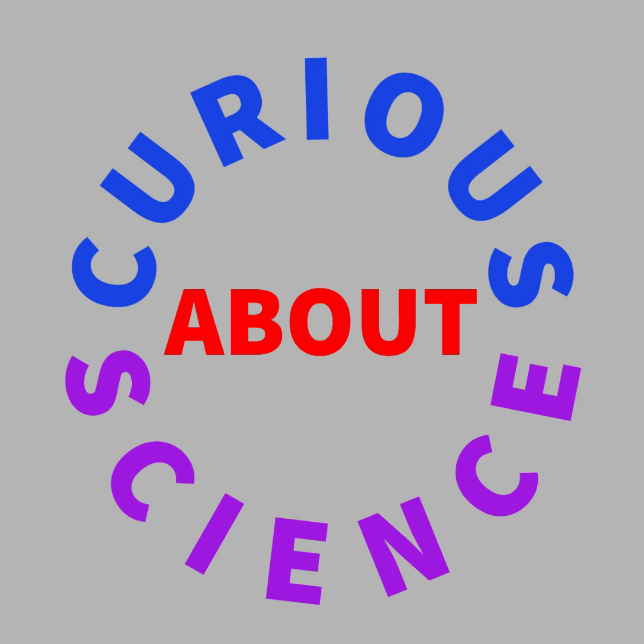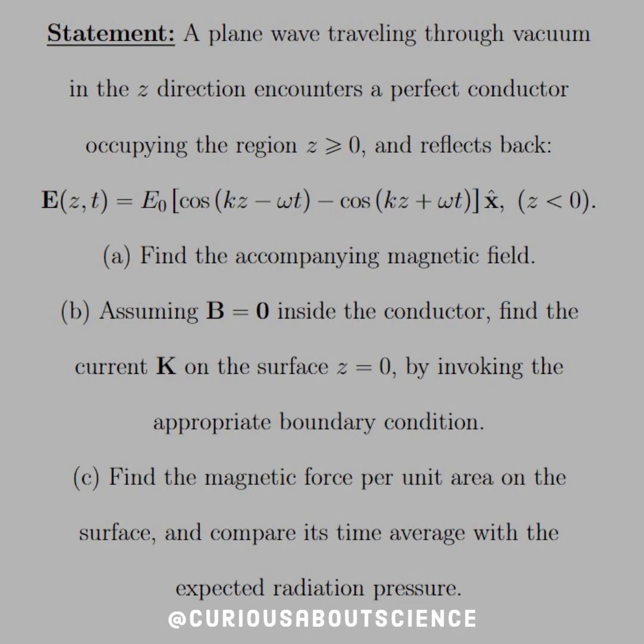Alrighty, we're closing in on the end of the chapter, but of course, we've got more vector stuff to deal with first. Alright, so the statement is, a plane wave traveling through vacuum in a z-direction encounters a perfect conductor occupying a region z greater than 0, and reflects back.